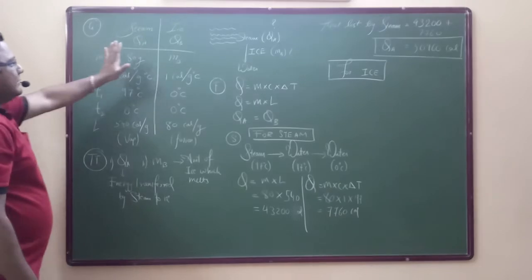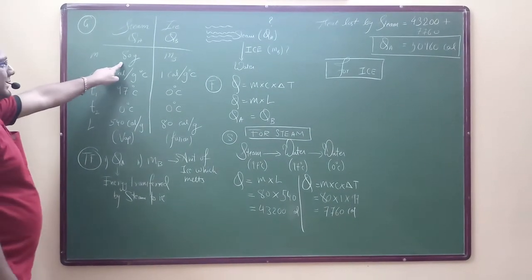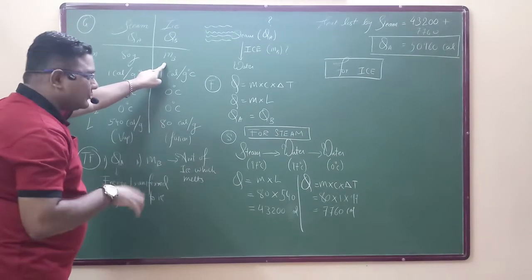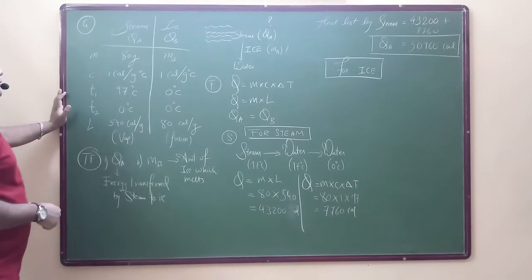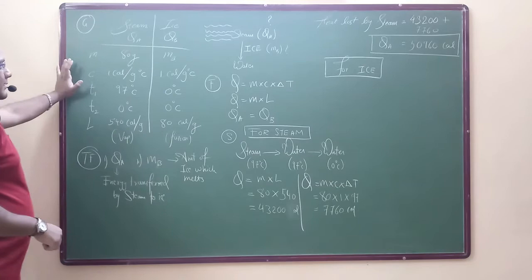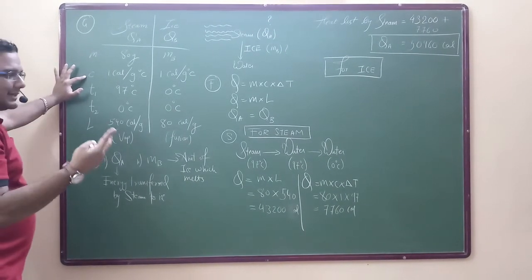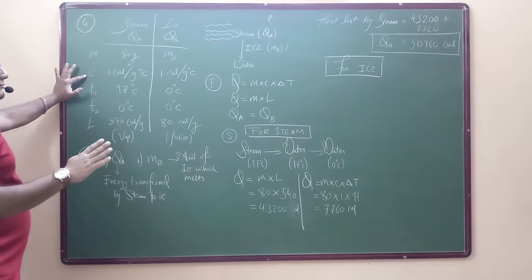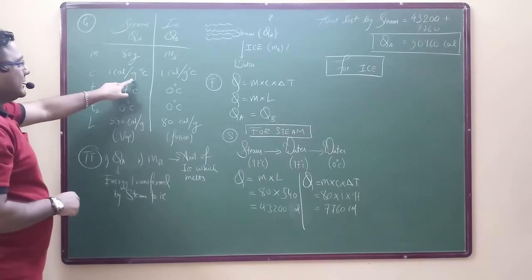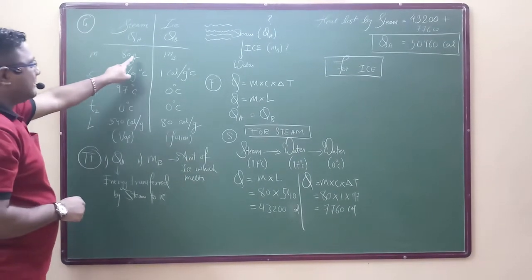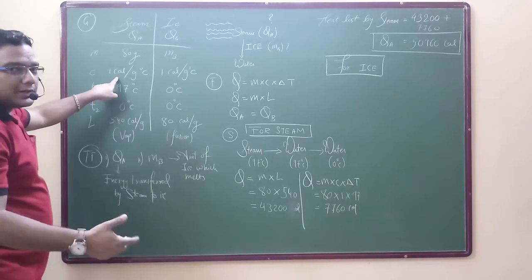So, given: we have two substances — steam and ice. Mass of steam is given as D. Mass of ice we don't know; we have to find out how much ice is needed to convert the steam into water. So let it be MB. Specific heat capacity is fixed. For steam, ice, and water, it is 1 calorie per gram degree Celsius. We have taken calorie per gram because the given mass is in grams. If the mass were in kilograms, we would use kilocalorie per kilogram degree Celsius.